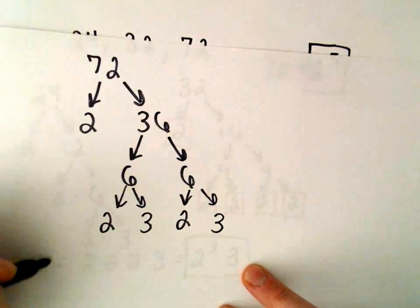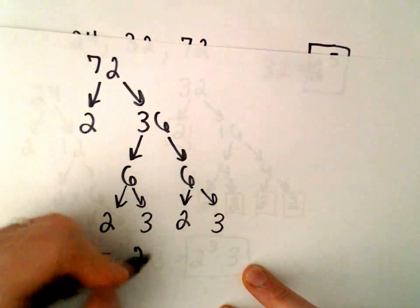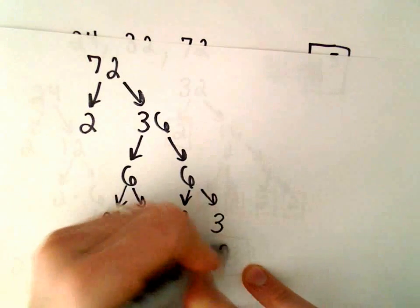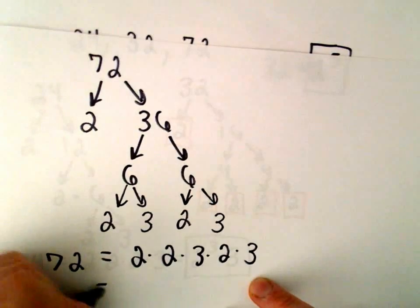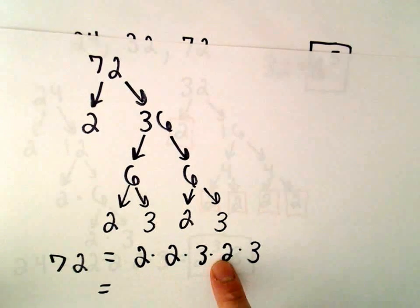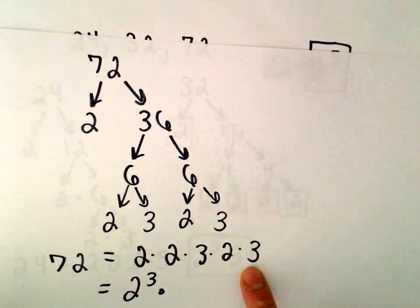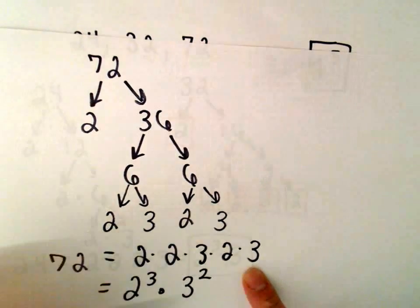So we can write 72 as 2 times 2 times 3 times 2 times 3. We can write this in any order we want. So we really have 2 times 2 times 2, which is 2 to the third power, and then 3 times 3, which is 3 to the second power.